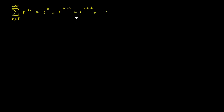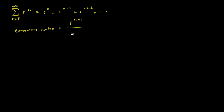There are a few things we've already thought about here. We know what the common ratio is — the ratio between consecutive terms. So r to the n plus one over r to the n is just going to be equal to r. Anything to the n plus one over that same thing to the n is just going to be r, or r to the first power. When you go from one term to another, you are just multiplying by r.